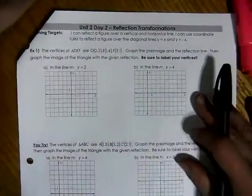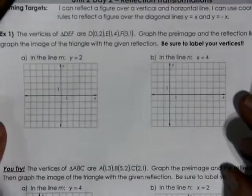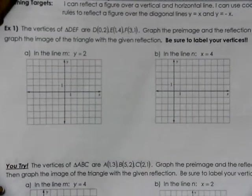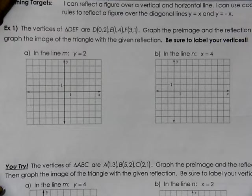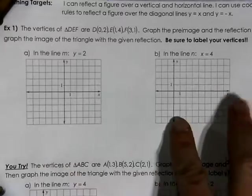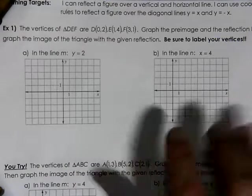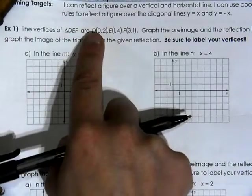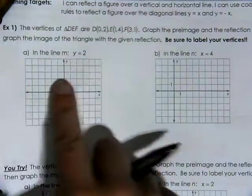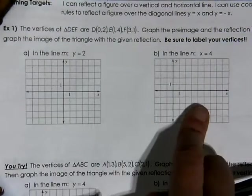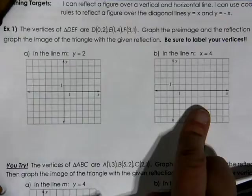Let's look at example number one. The vertices of triangle DEF are located at (0, 2), (1, 4), and (3, 1). Before we get started, please pause and plot triangle DEF on both graphs A and B, because we are going to be using the same exact ordered pairs.